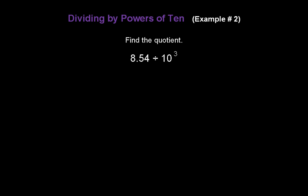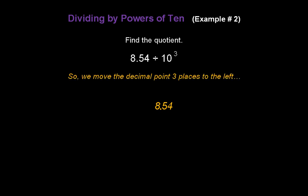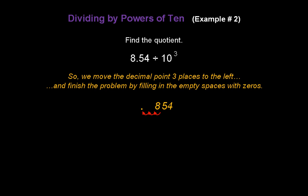Now let's try this one. Find the quotient of 8.54 divided by 10 to the third. Start by writing down 8.54. The exponent 3 tells us how many times to move the decimal point to the left — because remember, we're dividing this time. So move the decimal point three places to the left: one, two, three. Finish the problem by filling in empty spaces with zeros — we'll have two zeros behind the decimal point. Don't forget to put one in front. The answer is 0.00854.